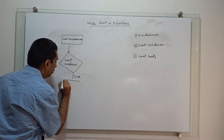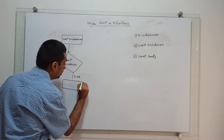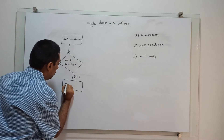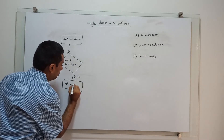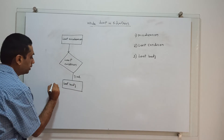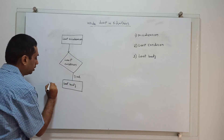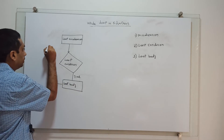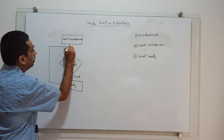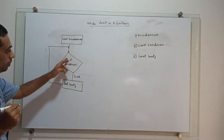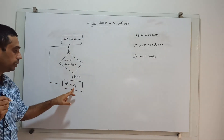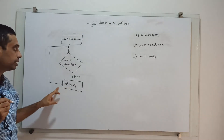If the condition is true, then the loop body will get executed. After the execution of the loop body, the control will again go back to the loop condition. If the condition is still true, the loop body will get executed again.